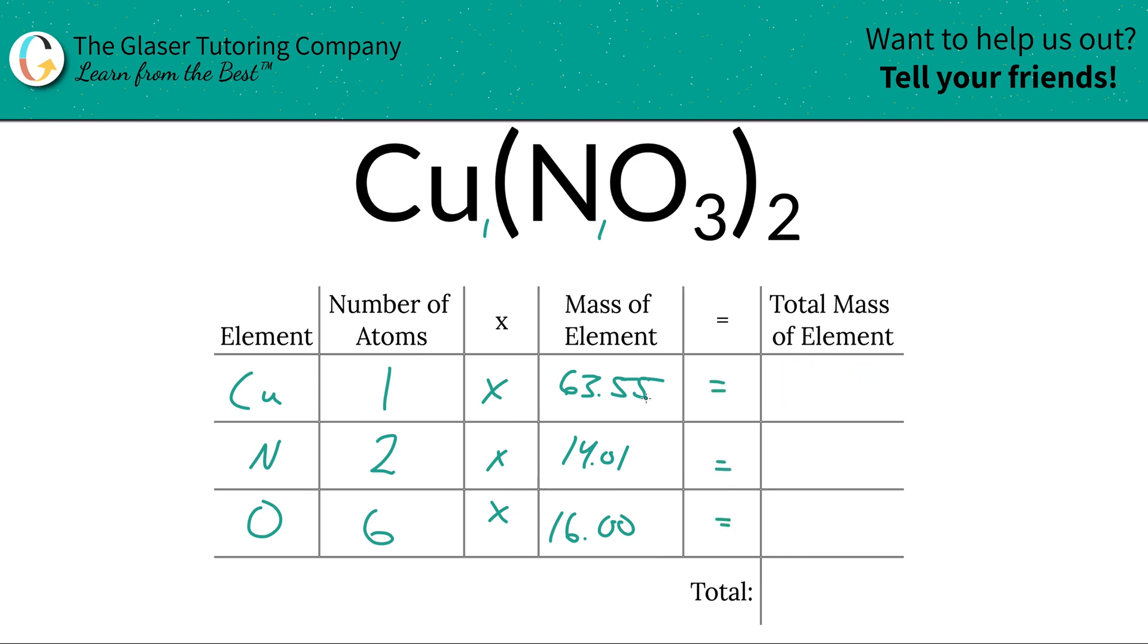So the total mass of the element now is simply going to be found by multiplying the row together. So this is going to be 63.55 total mass of copper. Total mass of the nitrogen is then multiplying that together. So that's 28.02. And then oxygen here is going to be 96. That's the total mass of the oxygen, just multiply those across.